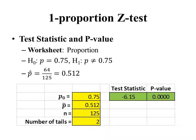The hypothesis test we're using here is called the one-proportion z-test. It's called one-proportion because it tests a claim about a single population proportion, and a z-test because the test statistic is a z-score. We're not going to go into the theoretical details of the calculation — you can read about that in the book.